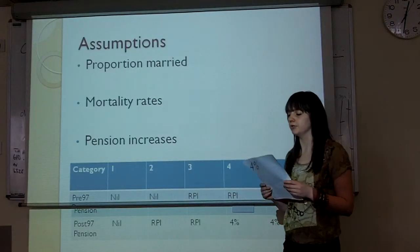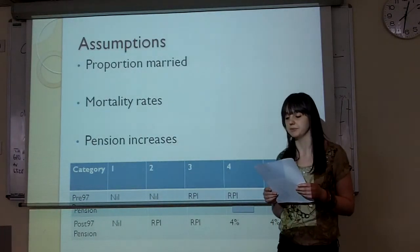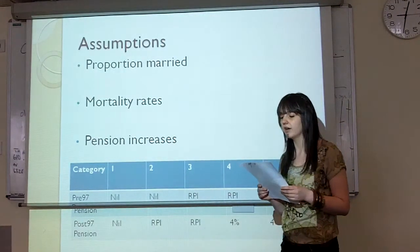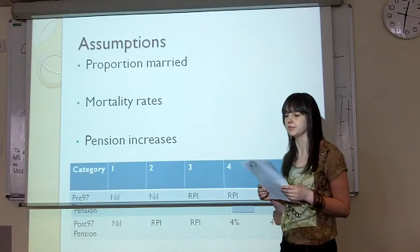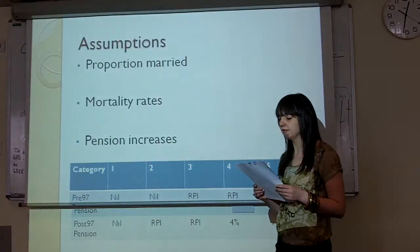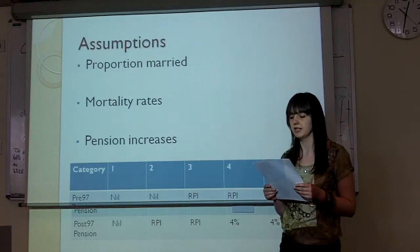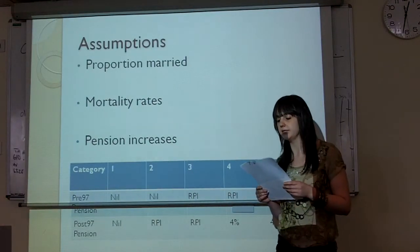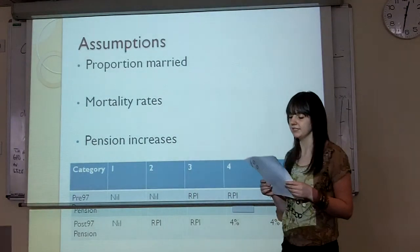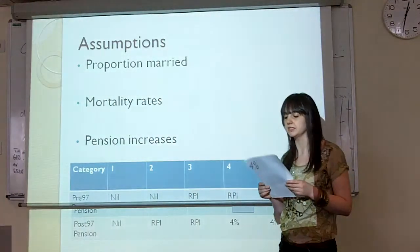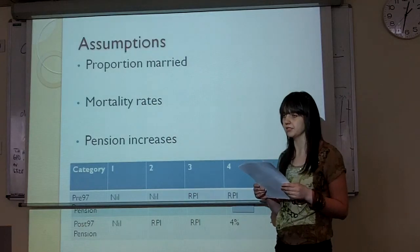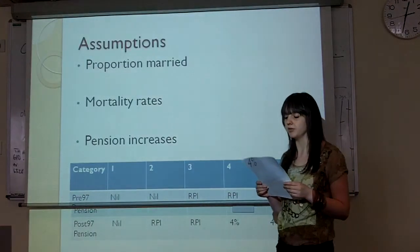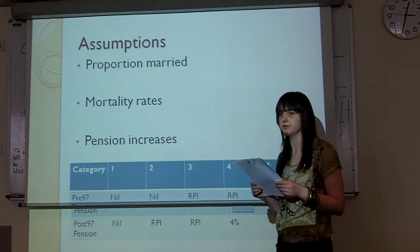With regard to the proportion of the population married, we used a figure of 90%. We are aware that this seems high when you consider the increasing divorce rate in our society today. However, we as actuaries are experienced practitioners. We also assumed wives who are 3 years younger than husbands, and assumed a spouse's pension on death in retirement to be 50%. When calculating mortality rates, we used the PMA92 and PFA92-based mortality rates as the most recent and reliable tables available to us. To make our results more relevant to the XYZ pension scheme, we decided to give non-pensioners a rate of minus 4 and pensioners a rate of minus 1.